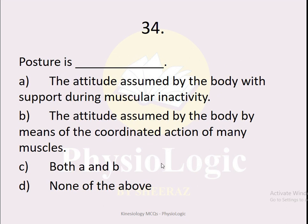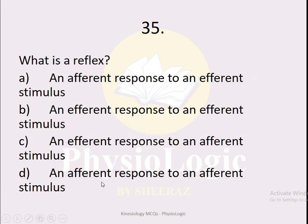MCQ number 34: Posture is — option A the attitude assumed by the body during muscular inactivity, option B the attitude assumed by the body by means of coordinated action of many muscles, option C both A and B, option D none of the above. The correct option is option C, both A and B. The body is always in a posture whether muscles are active or inactive. There are two types: active posture (option B) and inactive posture (option A).